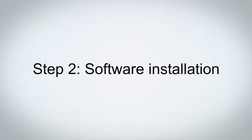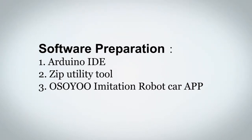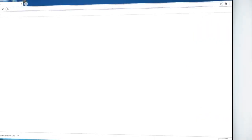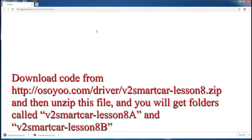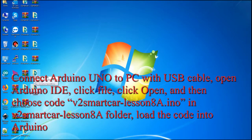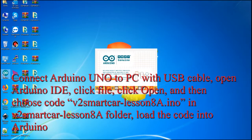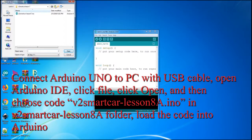Step 2: Software Installation. In this lesson, you will use Arduino IDE, a Zip Utility Tool, and the Osio Imitation Robot Car App. Download the code from Osio and unzip the file. You will get folders called V2 Smart Car Lesson 8a and V2 Smart Car Lesson 8b. Connect Arduino Uno to your PC with a USB cable. Open Arduino IDE, click File, click Open, and choose the code V2 Smart Car Lesson 8a.ino in the V2 Smart Car Lesson 8a folder.